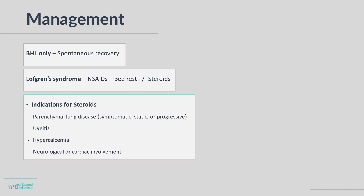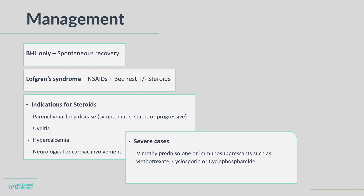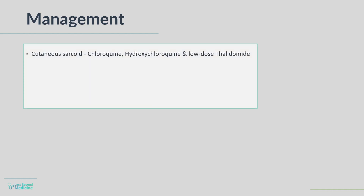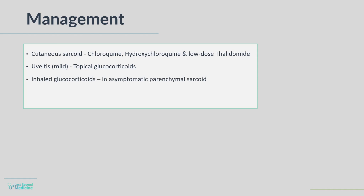A few patients relapse and may need a further course or long-term therapy. In severe illness, intravenous methylprednisolone or immunosuppressants such as methotrexate, cyclosporine, or cyclophosphamide may be needed. Anti-TNF-alpha therapy may be tried in refractory cases. For cutaneous sarcoidosis with limited pulmonary involvement, chloroquine, hydroxychloroquine, and low-dose thalidomide may be useful. Topical glucocorticoids may be used in mild uveitis. Inhaled glucocorticoids have been used to shorten systemic glucocorticoid use in asymptomatic parenchymal sarcoidosis. Patients should be educated to avoid strong sunlight, as it may precipitate hypercalcemia and affect renal function.